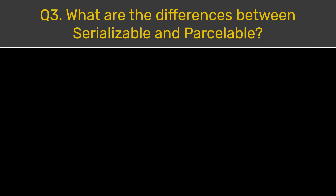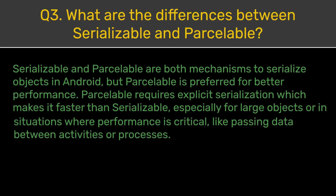Question 3. What are the differences between Serializable and Parcelable? Serializable and Parcelable are both mechanisms to serialize objects in Android, but Parcelable is preferred for better performance. Parcelable requires explicit serialization which makes it faster than Serializable, especially for large objects or in situations where performance is critical, like passing data between activities or processes.